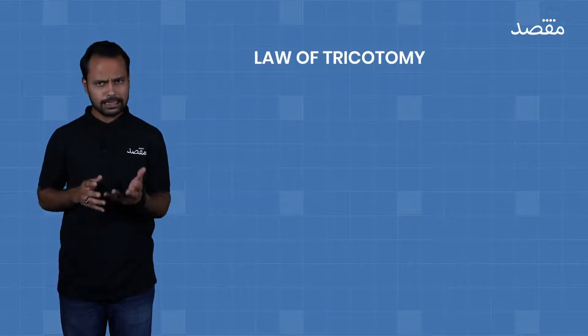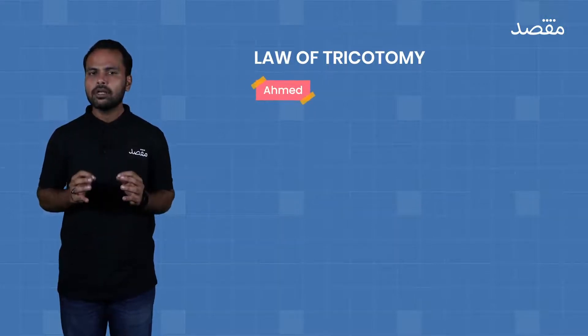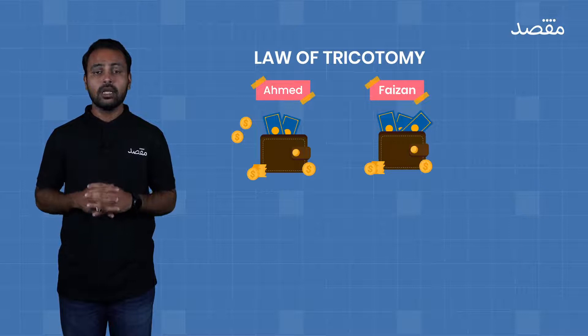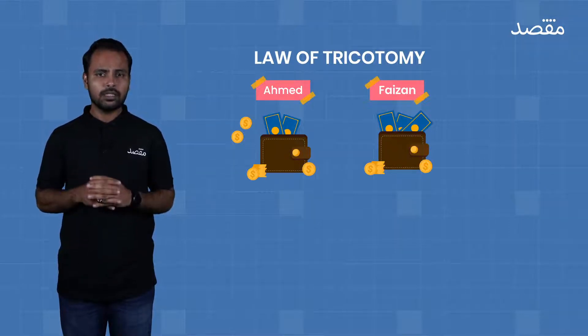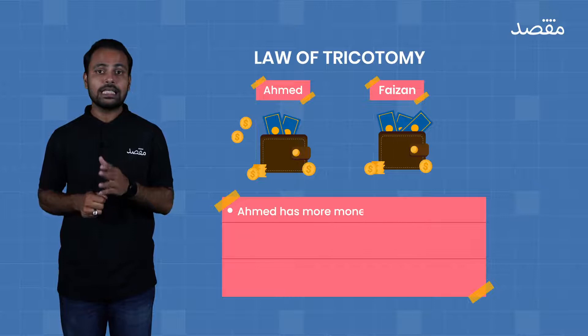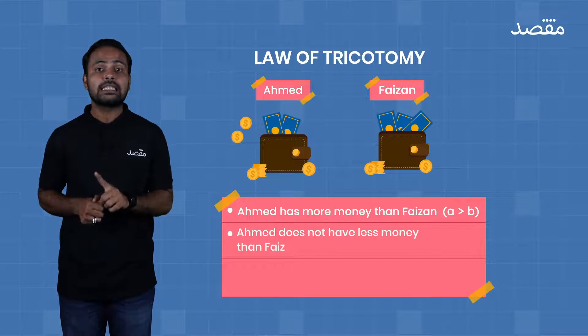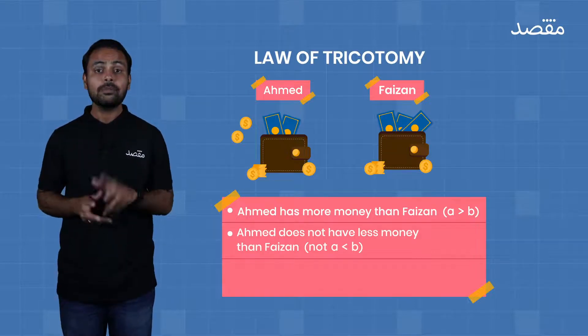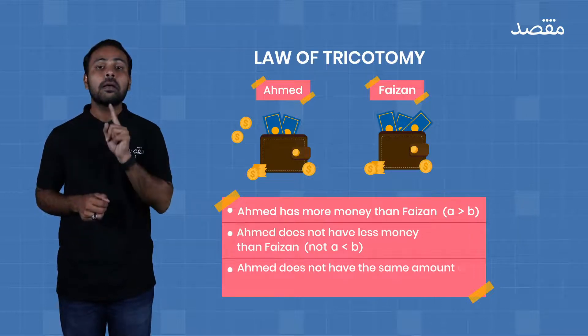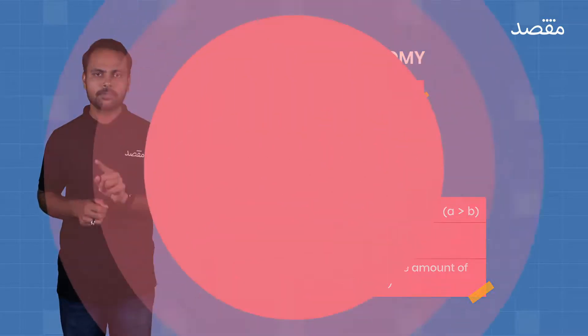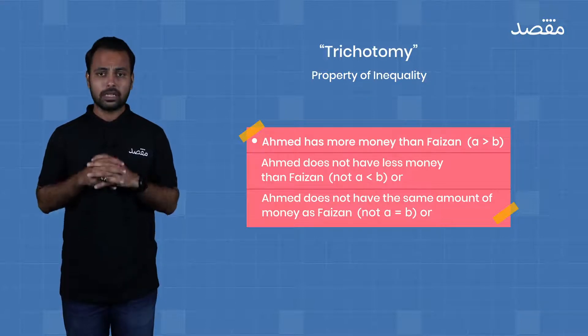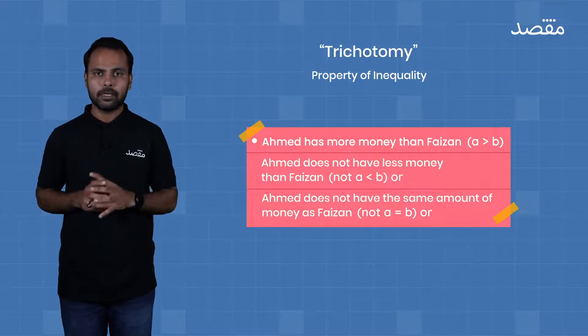Now let's look at the properties of inequalities. For the first property, we will evaluate the law of trichotomy. Let's take an example: let's say Ahmed has more money than Fezzan. There are basically three possibilities here. Either Ahmed has more money than Fezzan, which also means that Ahmed does not have less money than Fezzan, and this also means that Fezzan and Ahmed do not have equal amounts.